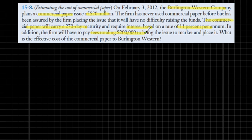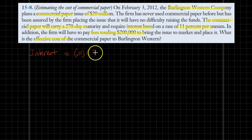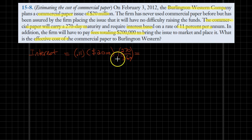What would be the effective cost of this commercial paper issued by Burlington Western? We can first calculate the interest expense associated with this issue. The interest rate is 11% and we are issuing 20 million dollars worth of commercial paper, borrowing effectively for 270 days out of 360 days. As a result, the interest amount totals 1,650,000 dollars.